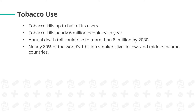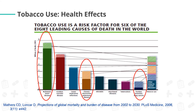Let's discuss tobacco use. Tobacco, cigarette, or pipe kills up to half of its users. Tobacco kills nearly 6 million people each year and is projected to rise to more than 8 million by 2030. Nearly 80% of the world's 1 billion smokers live in low- and middle-income countries. This graph shows that tobacco use is a risk factor for 6 of the 8 leading causes of death in the world.